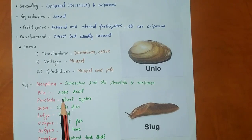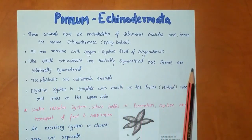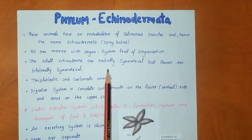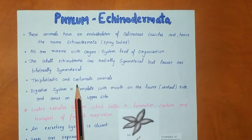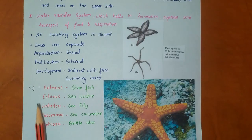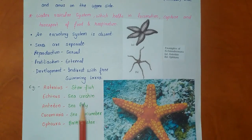Examples of molluscs include Pila, Loligo, Octopus, and Chiton. Next is phylum Echinodermata. These animals have an endoskeleton of calcareous ossicles, and hence the name Echinodermata means 'spiny-bodied'. All are marine with organ-system level of organization. Adult echinoderms are radially symmetrical but larvae are bilaterally symmetrical. They are triploblastic and pseudocoelomate. The digestive system is complete with the mouth on the lower side and anus on the upper side. A water vascular system is present, which helps in locomotion, capture and transport of food, and respiration. An excretory system is absent. Sexes are separate; reproduction is sexual; fertilization is external; development is indirect with free-swimming larvae. Examples include starfish, sea urchin, sea lily, sea cucumber, and brittle star.